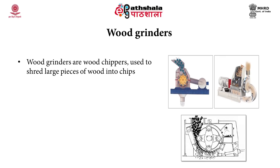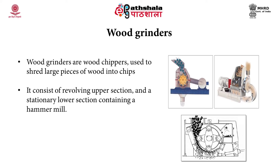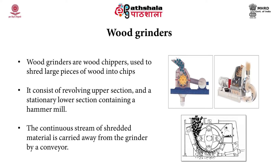Wood grinders, also called wood chippers, are used to shred large pieces of wood into chips. They consist of a revolving upper section and a stationary lower section containing a hammer mill. The continuous stream of shredded material is carried away by a conveyor. The image on the right shows wood chips being inserted into a ball mill, shredded, with small particles collected at the bottom.